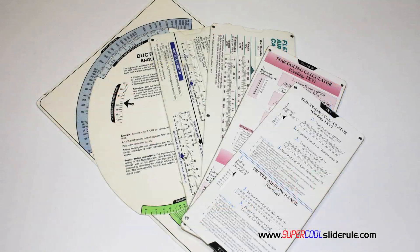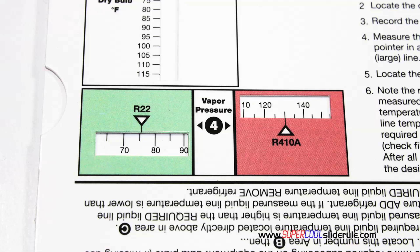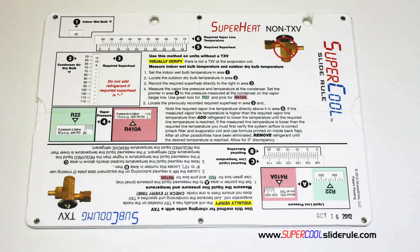Historically, technicians have carried four or five different slide rules: one for R22, one for R410A, one for metal duct sizing, one for flexible duct sizing, and yet others for diagnostics or troubleshooting. Thankfully, those days are gone. This one tool will allow you to charge a system with R22 or R410A in either the superheat or subcooling method.